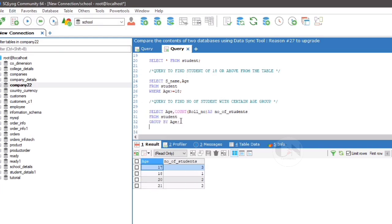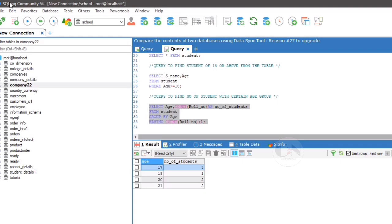To display certain age group with total number of students more than one, having clause just below group by clause, that is having count within bracket roll number greater than one.